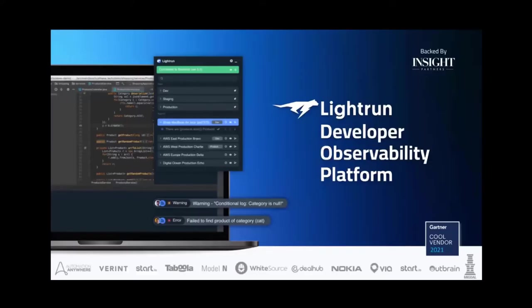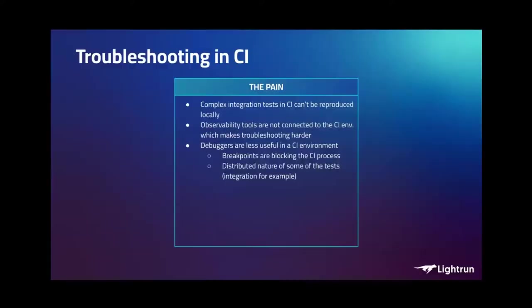Let's talk about what this cloud-native modern world entails for modern software developers. I want to touch on three different places where troubleshooting is especially difficult. The first one is troubleshooting in CI — continuous integration — the process of getting software from source code to an artifact available for delivery. Understanding exactly what's going on inside the agent, why it produced the artifact it did or why it failed, is a notorious problem. Currently, observability tools are not really focused on CI.